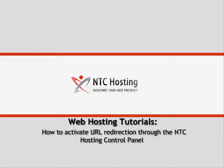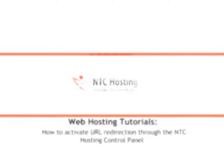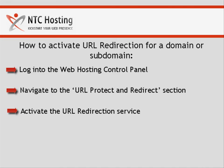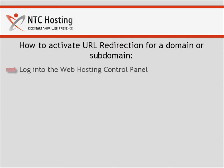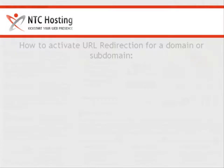This quick movie will show you how to set URL redirection for your domain or subdomain through your control panel. To activate URL redirection for your domain or subdomain, you will need to go through three simple steps: log in to your control panel, open the URL redirect section, and activate the URL redirection option.